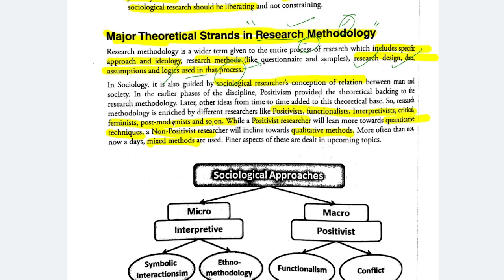Research methodology is enriched by different researchers under different schools of thought, whose ideology and beliefs vary from one another. You will encounter positivists, functionalists, interpretivists, critical feminists, post-modernists, etc. We are going to discuss these things in detail, chapter by chapter. You will be more clear on these things because in the next chapters we have to discuss them. Post-modernists — there is no other topic in your syllabus, you will only see it here.